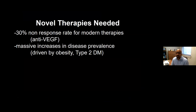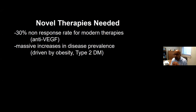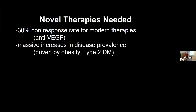Proof that that's correct is that angiostatic medicines like the anti-VEGF agents that we use for this disease are very effective — in fact, for some patients, they're nothing short of miraculous. But even these very good modern therapies have important limitations. Across the studies that look at these agents, there are about a third of patients that don't respond to anti-VEGF monotherapy. Added to that, we have an increasing prevalence of diabetes, primarily driven by the pandemic of obesity around the world.